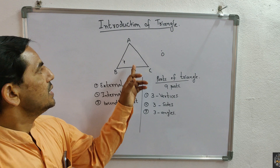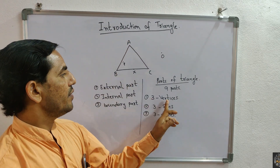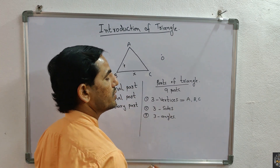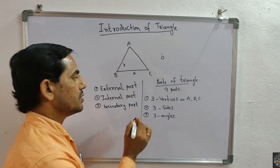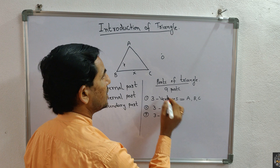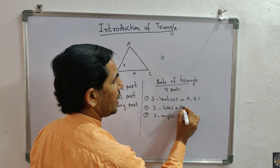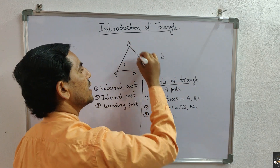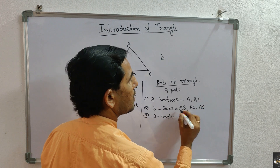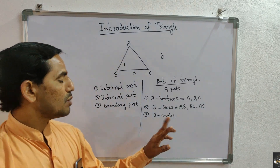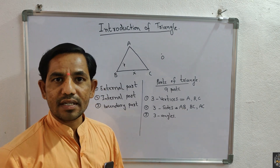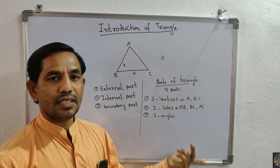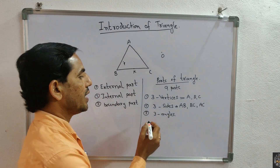In triangle ABC, the three vertices are: A, B, and C. The three sides are: AB, BC, and AC. Note that writing AB or BA is both correct — similarly BC or CB, and AC or CA are both acceptable ways to name the sides.